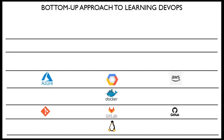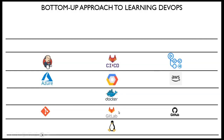After Docker, learn a cloud provider of your choice — Azure, GCP, or AWS. In our demonstration today we'll be using AWS. Then learn CI/CD tools: Jenkins first. Most organizations are moving away from Jenkins and toward GitLab CI/CD and GitHub Actions. In this training we'll walk through Jenkins and include GitLab CI/CD as a bonus module.